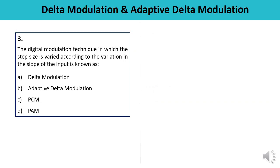Question 3: The digital modulation technique in which step size is varied according to the variation in the slope of the input is known as? You have studied about Delta Modulation and Adaptive Delta Modulation and the difference between these two. In Delta Modulation, step size is fixed, while in Adaptive Delta Modulation, step size varies according to the variation in the input signal. So the answer is B — Adaptive Delta Modulation.